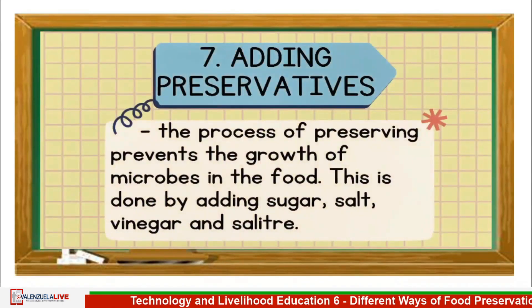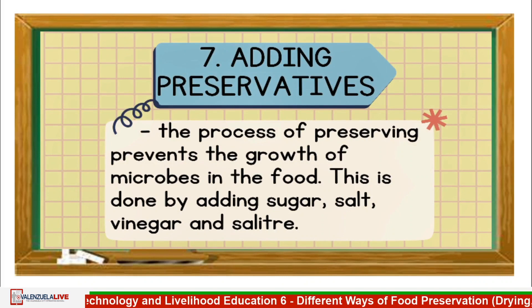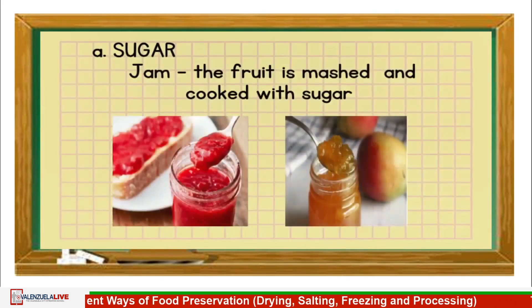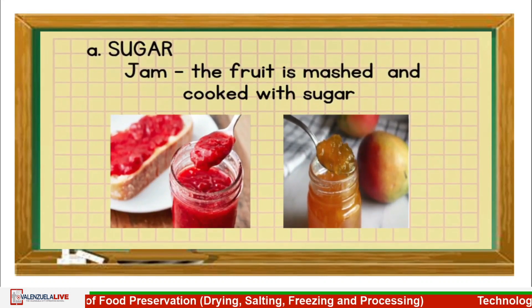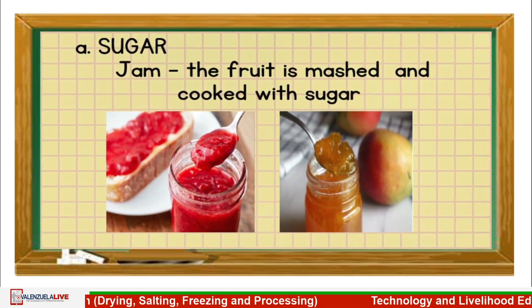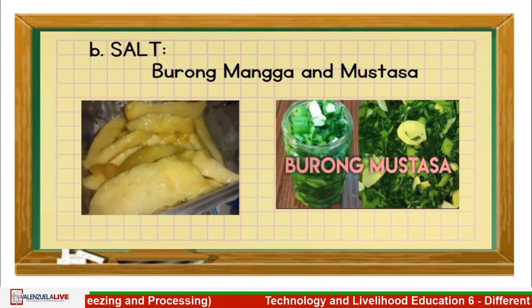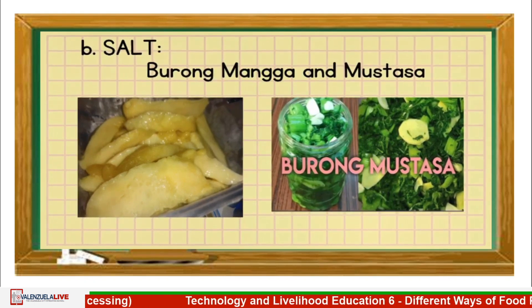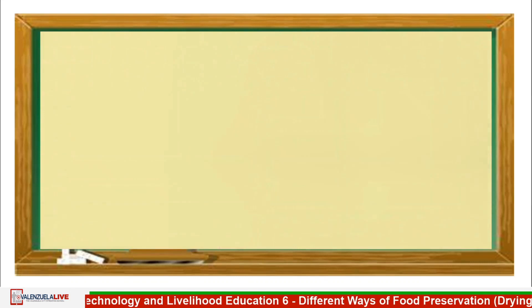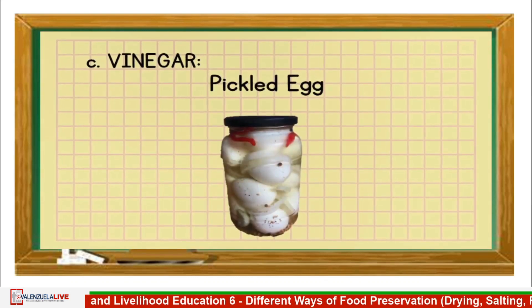Adding preservatives — this process prevents the growth of microbes in the food. It is done by adding sugar, salt, vinegar, and salitre. Sugar: example is jam, where the fruit is mashed and cooked with sugar. Salt: examples are burong manga and mustasa. Vinegar: example is pickled egg.